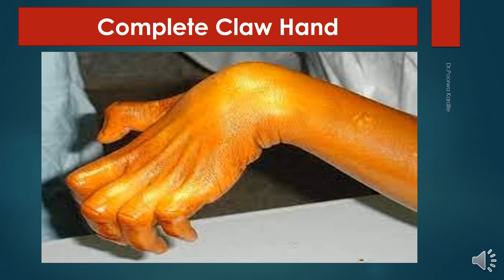This slide is of complete claw hand, caused by combined lesion of the median nerve and ulnar nerve at the elbow. It is produced by a lesion of the medial cord and lower trunk of the brachial plexus. The deformity includes hyperextension of the wrist due to paralysis of flexors and unopposed extensors, hyperextension of metacarpophalangeal joints due to paralysis of lumbricals, and flexion of interphalangeal joints.